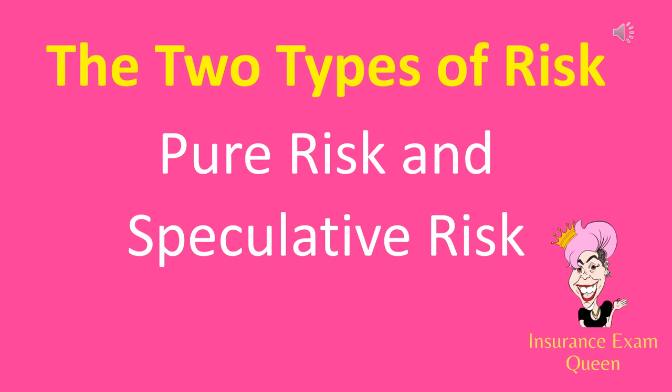The two types of risks are pure risk and speculative risk. In the next few slides we'll define each one, but right now it's important to remember these two types so you can recall them on the insurance exam. The two types of risk are pure risk and speculative risk.